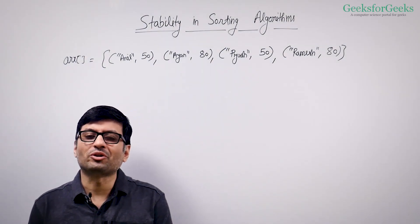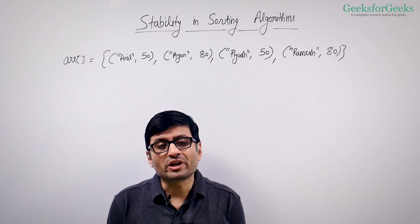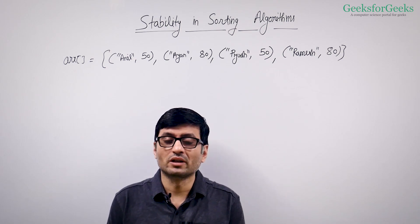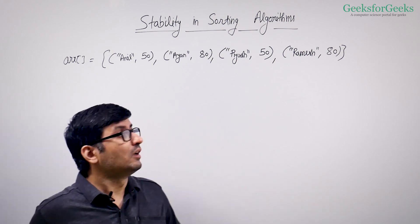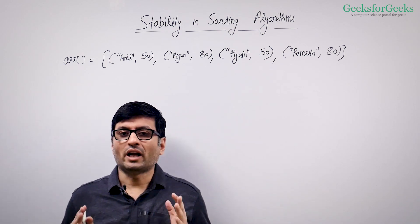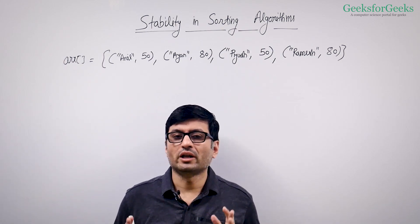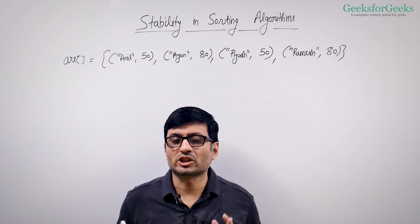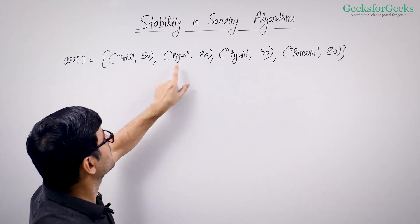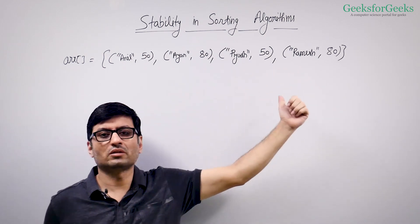In this video we are going to talk about stability in sorting algorithms. This is an important criteria to analyze algorithms — we want to know which algorithm is stable and which one is not. To understand this, we are given an array of students. This array is already sorted in alphabetical order of their names, so it's lexicographically sorted: Anil comes first, then Iron, then Piush, and then Ramesh — increasing order of names.